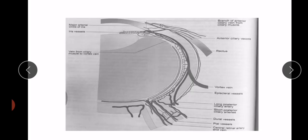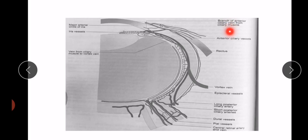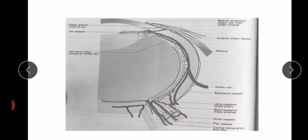Here you can see the major arterial circle of the iris and iris vessels. Here you can see anterior ciliary vessels, and a branch of the anterior ciliary vein from the ciliary muscle. Here you can see episcleral vessels that drain the aqueous humor, a vortex vein, the long posterior ciliary artery, short posterior ciliary arteries, dural vessels, pial vessels, and the central retinal artery and vein — all running together in a bundle.